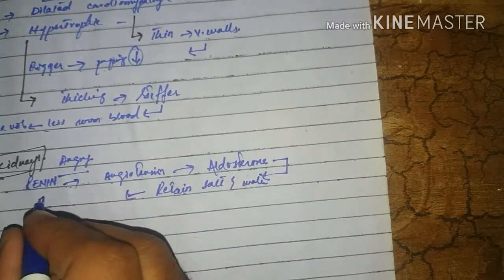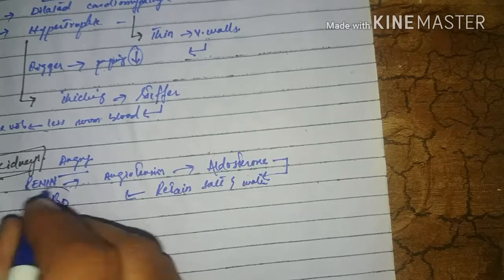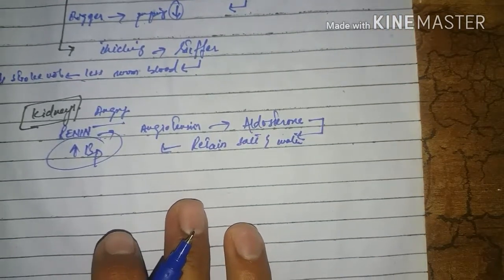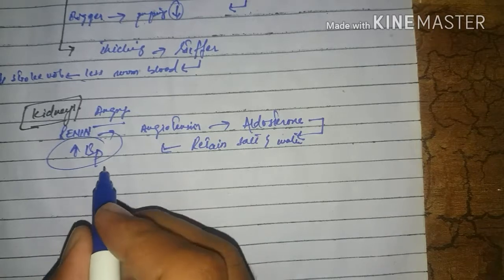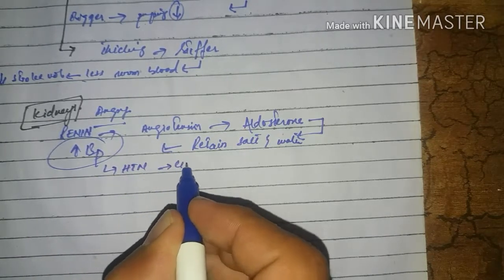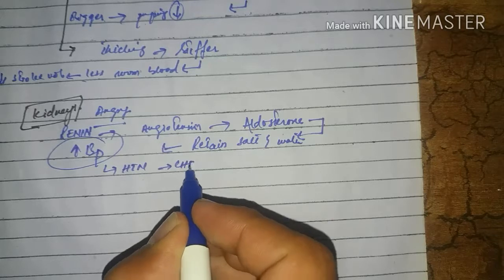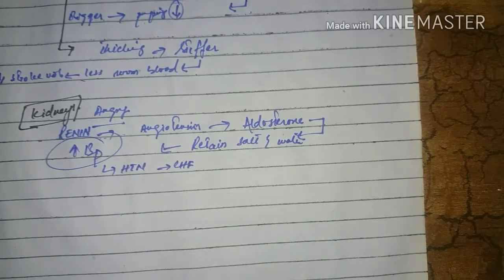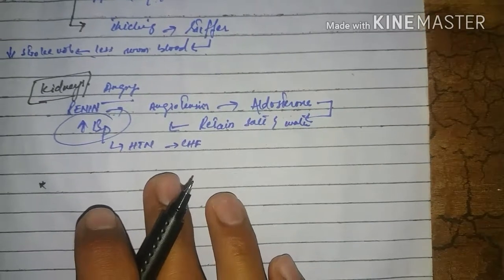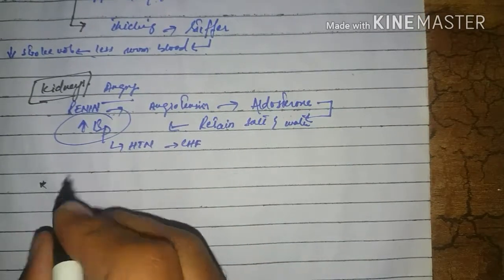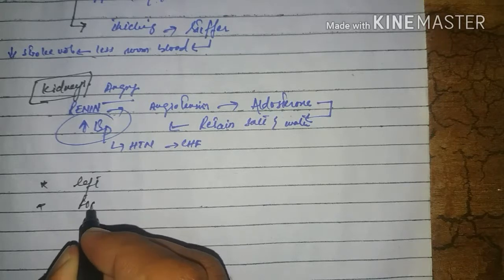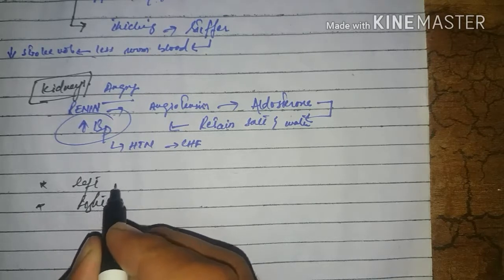Due to angiotensin, there is an increase in blood pressure. Long-term elevated BP leads to congestive heart failure. Now moving towards failure of the heart: there are two types of failure — left side failure and right side failure.